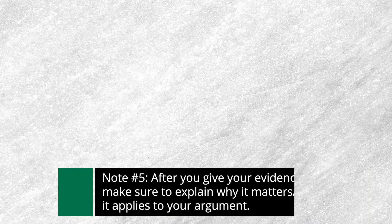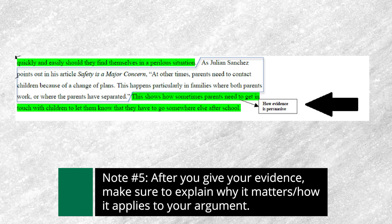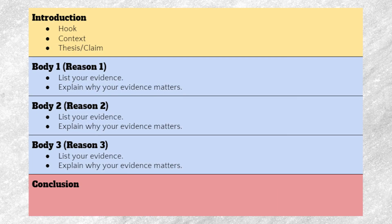Note number five: after you give your evidence, make sure to explain why that evidence matters. You're essentially giving more context and explaining your beliefs. It's important to give the evidence — that's the most important part — but you want to make sure to include a short blurb illustrating why that evidence backs up your point. So essentially, those are the rules for the body of your argumentative essay: write three reasons that support your side, back up each of those reasons with evidence, and support your evidence by explaining why it matters.